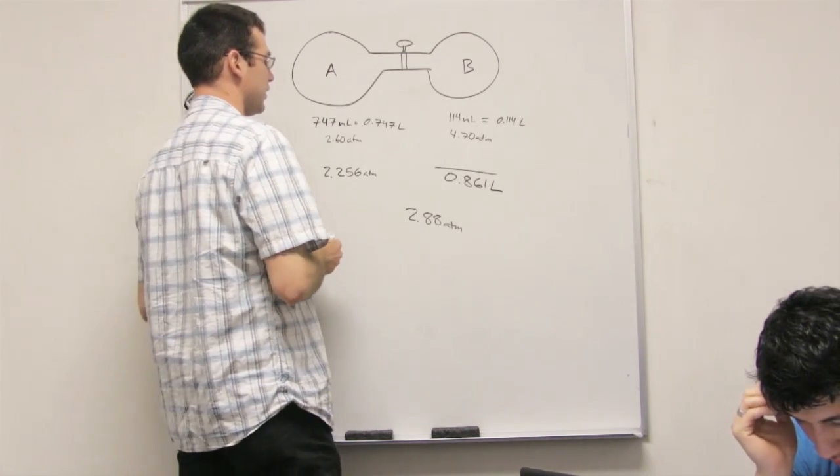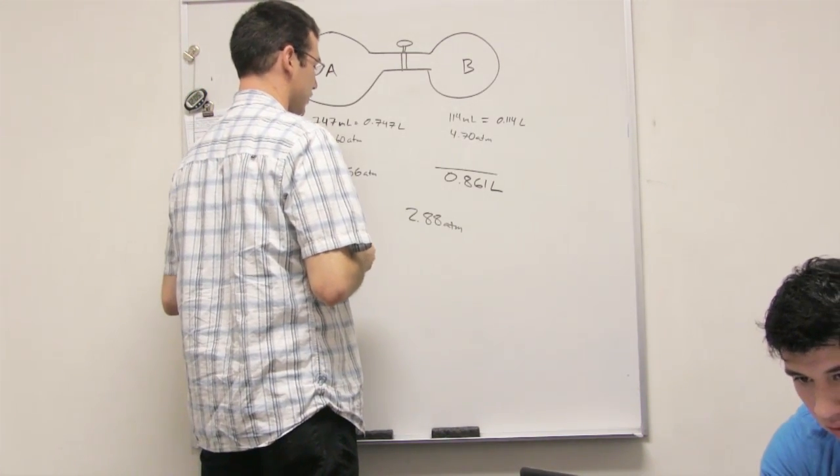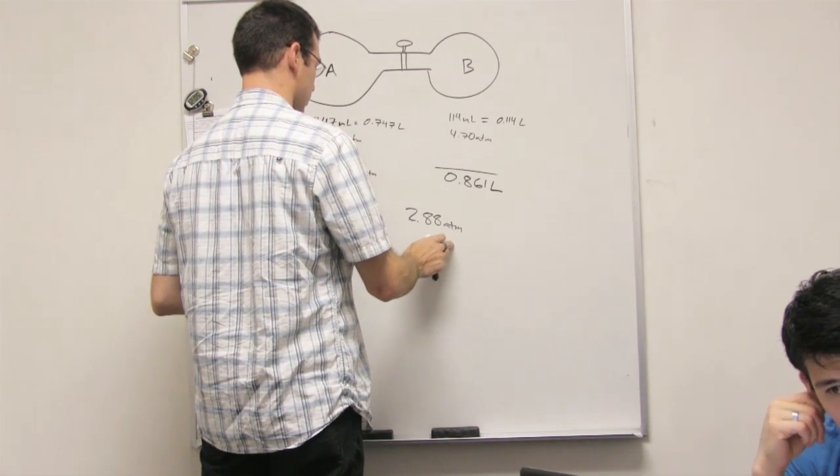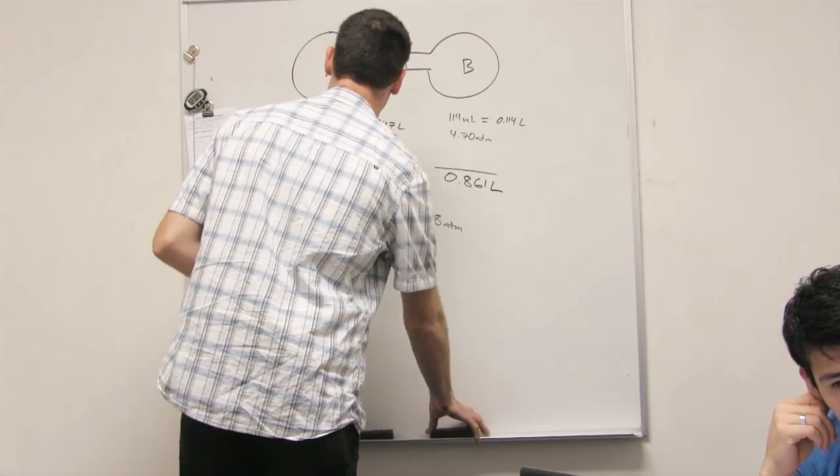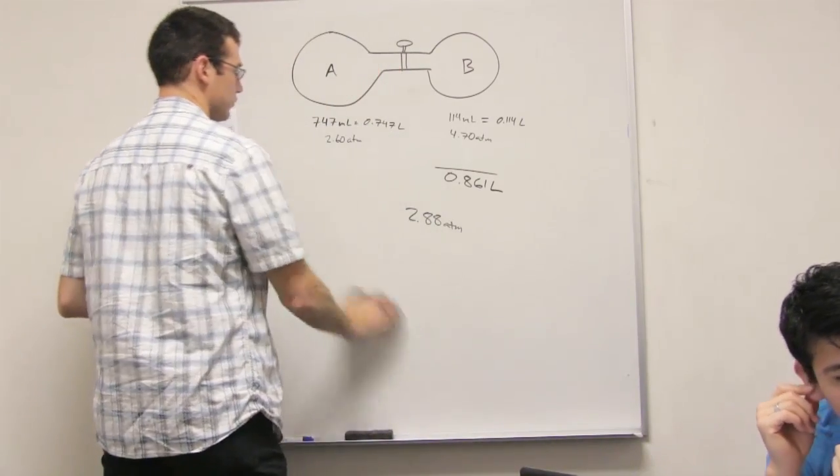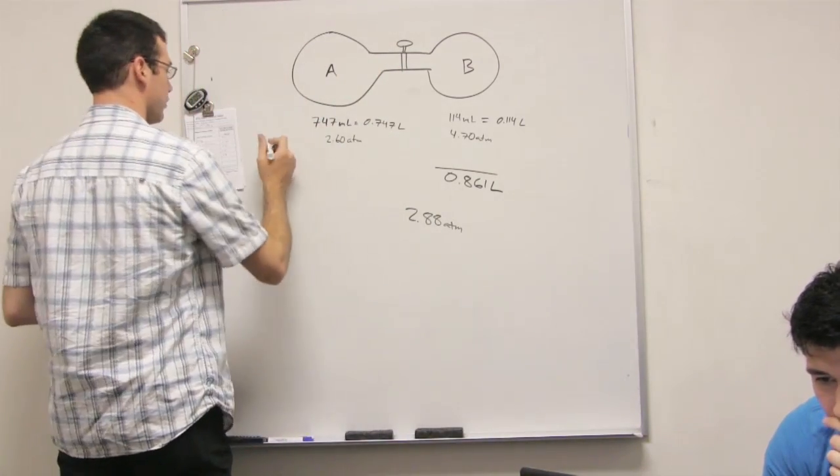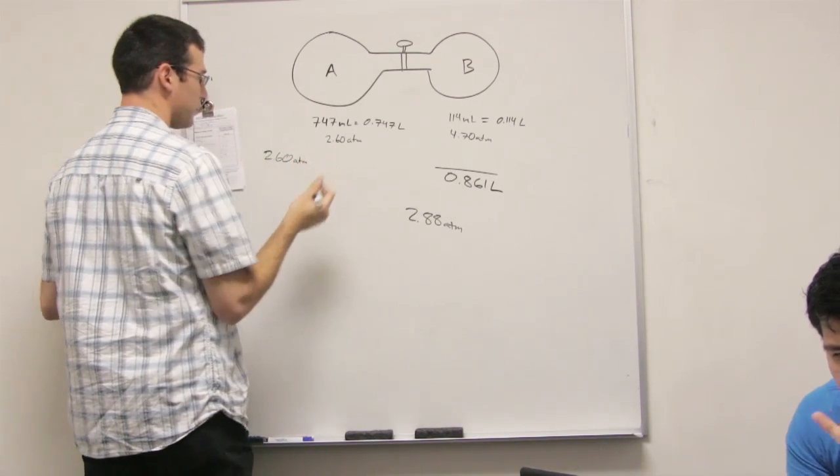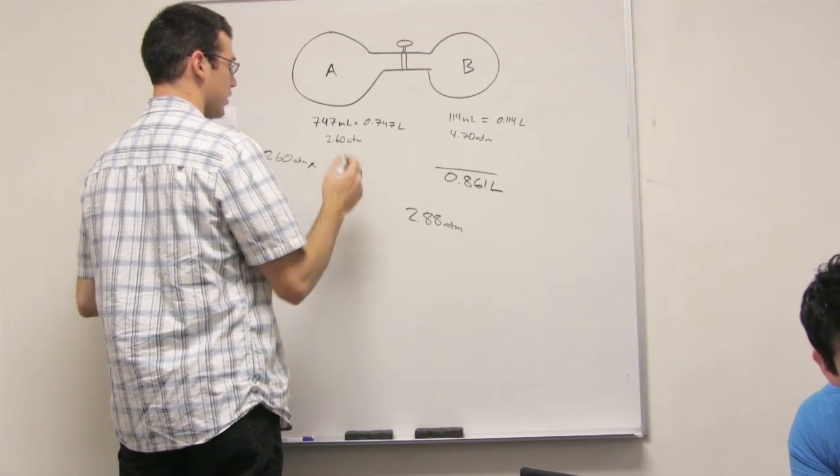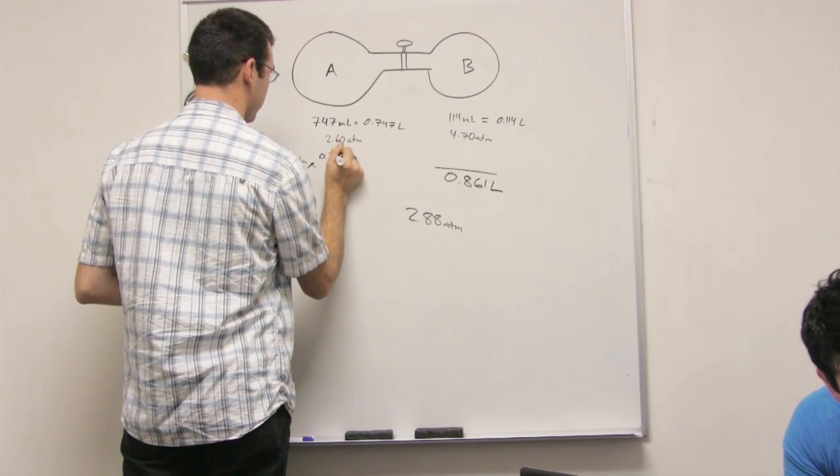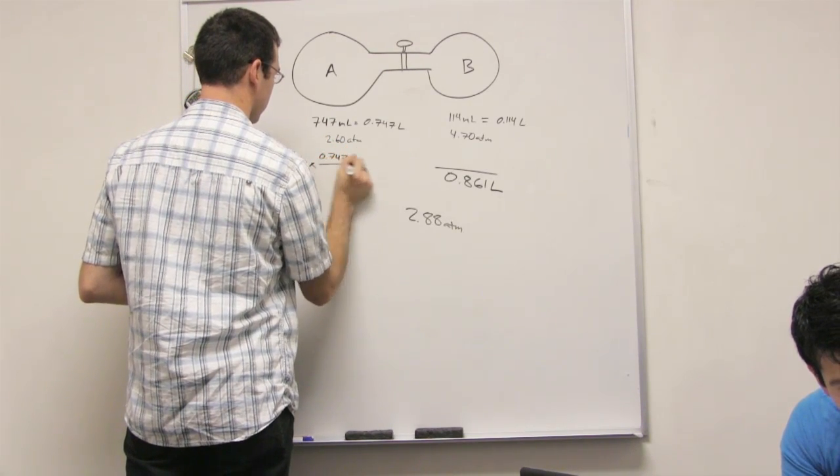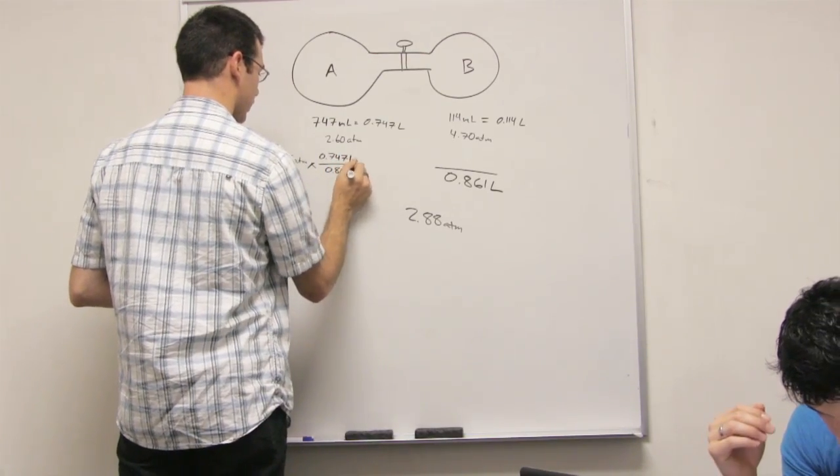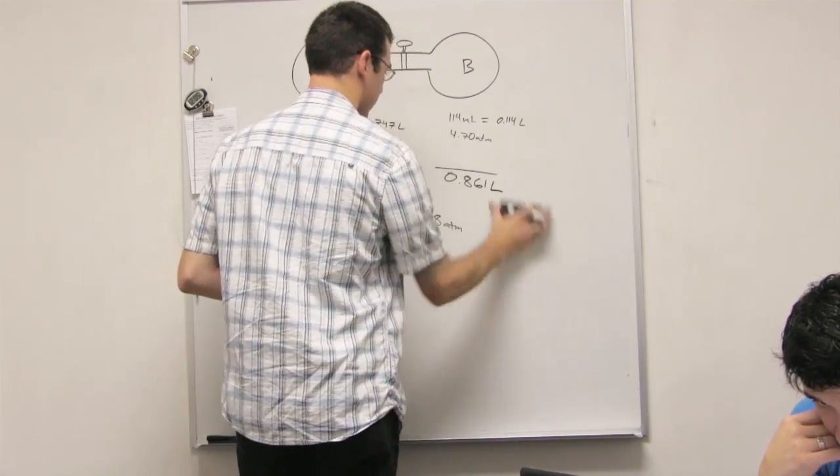So that makes complete sense. So what we ended up doing was that we took the 2.6 atmospheres and we had to multiply it times its percentage. It's going to be the 0.747 liters over the 0.861 liters because that was the sum.